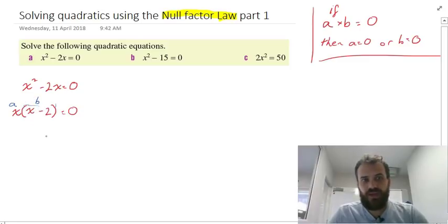So if x times (x - 2) equals zero, then either x equals zero or x - 2 equals zero.